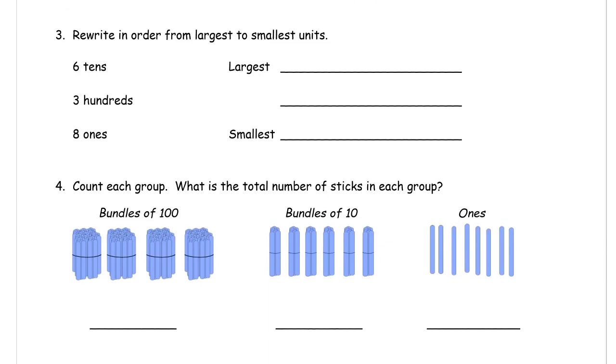Now we're rewriting in order from largest to smallest units. So largest first, smallest last. Hundreds are the largest units. Units are what we're counting, right? We're counting tens. We're counting hundreds. We're counting ones.